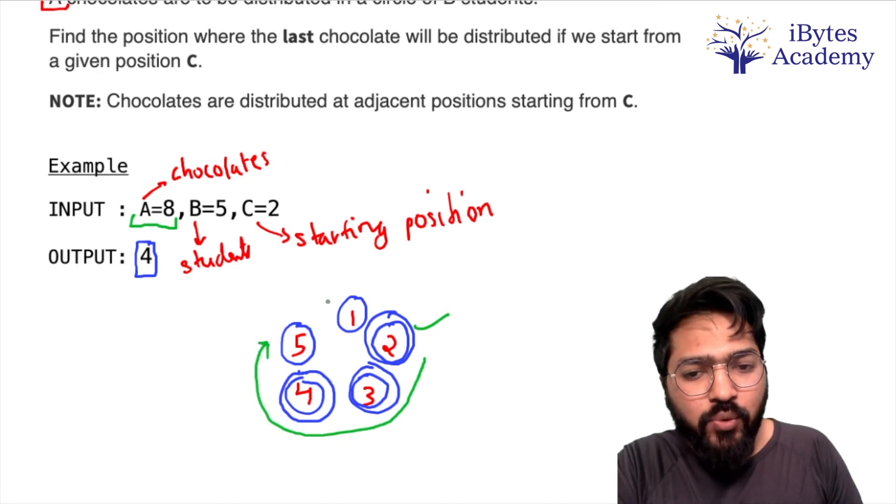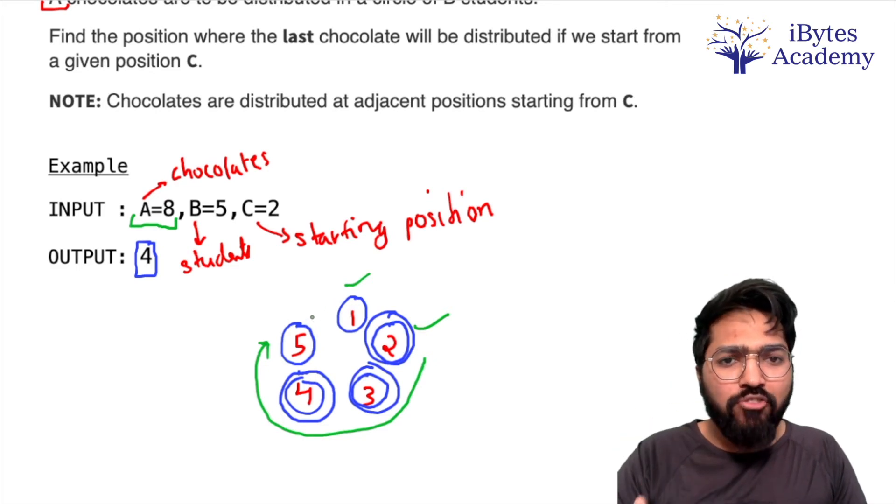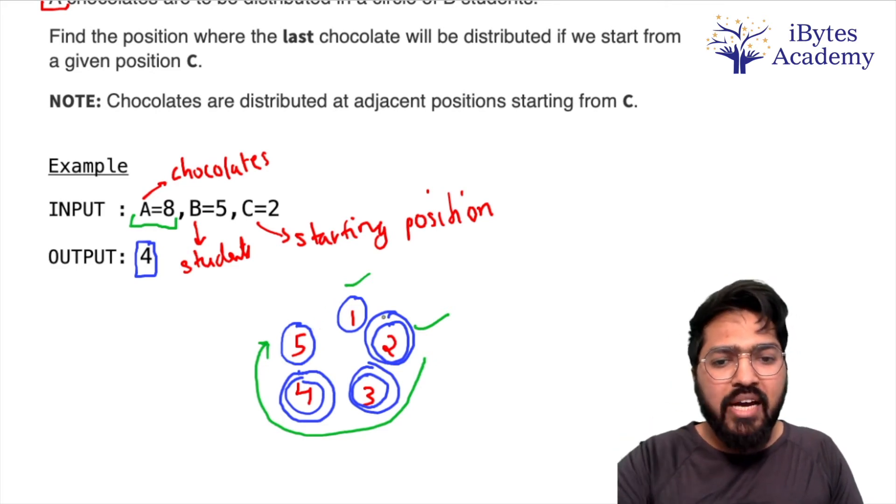Jaise hum 5 se exceed karne wale honge, hum log usko reset kar denge with 1 and so on. Hum log chalte jayenge. At the end of the loop jo bhi hamari current position hogi, that is going to be my answer.